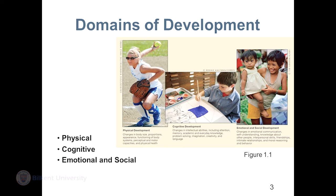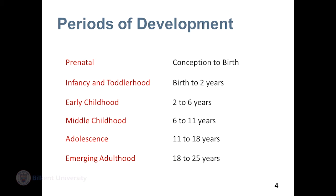There are several domains of development: physical development, cognitive development, and emotional and social development. In this course, we're going to focus more on cognitive and emotional and social development, though we will discuss physical development a little as well. Your book has a whole chapter on it that I'm not including — if you're interested, please go ahead and read it. There are also different periods in development.